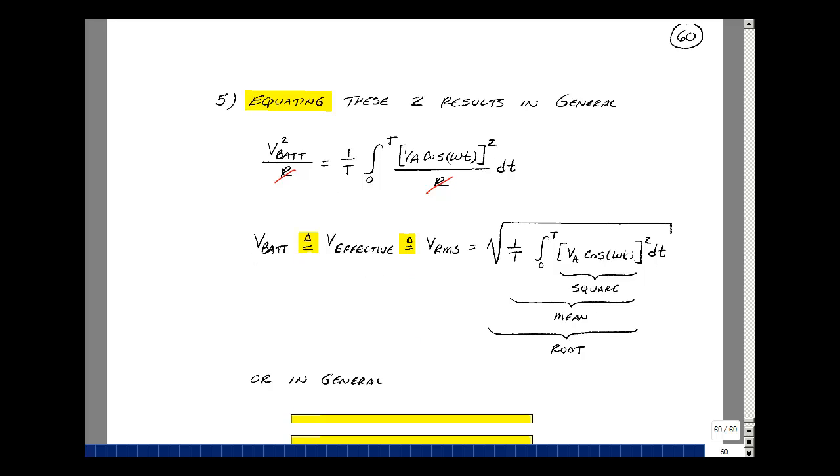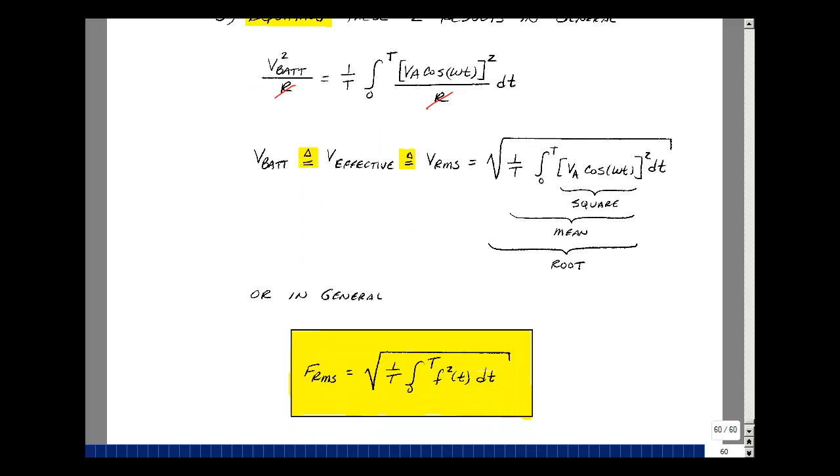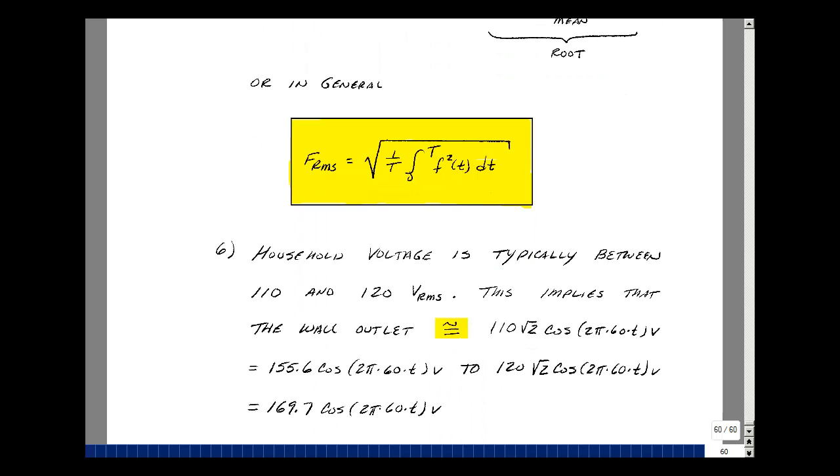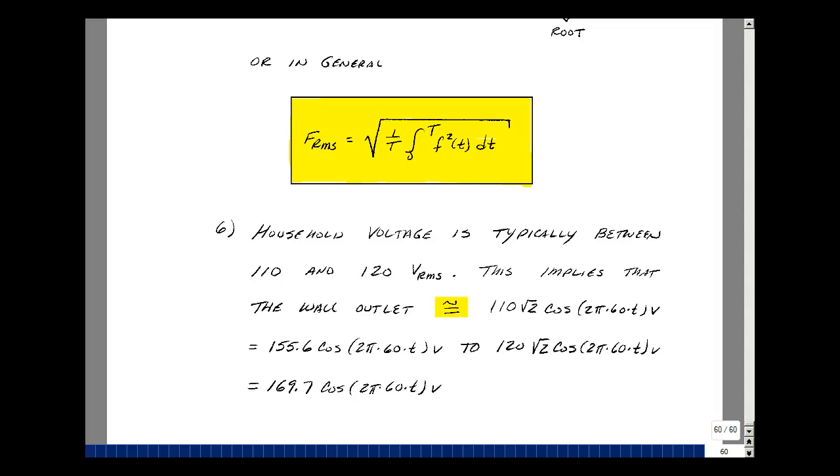To create a general formula for calculating an RMS value of a voltage or a current, it's going to be the integral of the function squared dt, integrated from 0 to a period, divided by the period, and then square root.